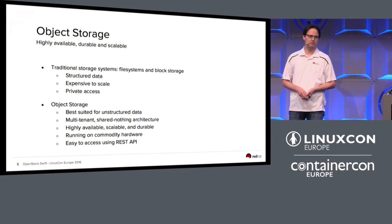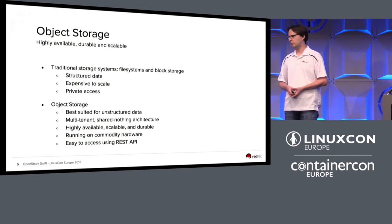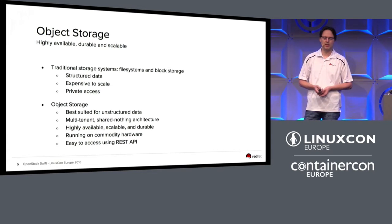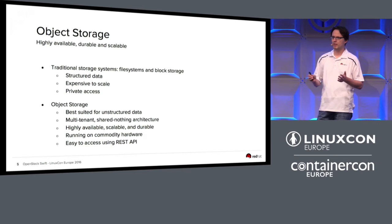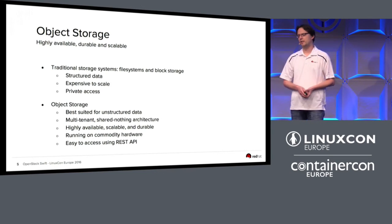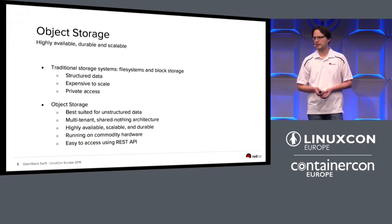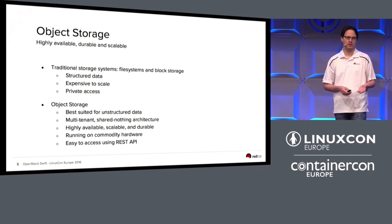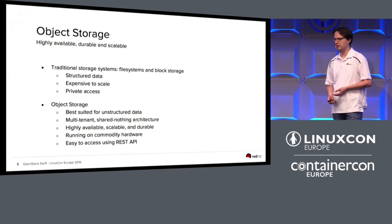That's where object storage comes into play. It's best suited for unstructured data — a video, a photo, maybe even the backup of your database. Traditionally, object storage systems — the most well-known is probably Amazon S3 — are about multi-tenancy, so that you have many users, each with their own working space where data is stored. The architecture is basically trying to share nothing, so that if part of your cluster fails, you're still able to retrieve data and store new data. We're aiming for highly available, scalable, and durable systems.